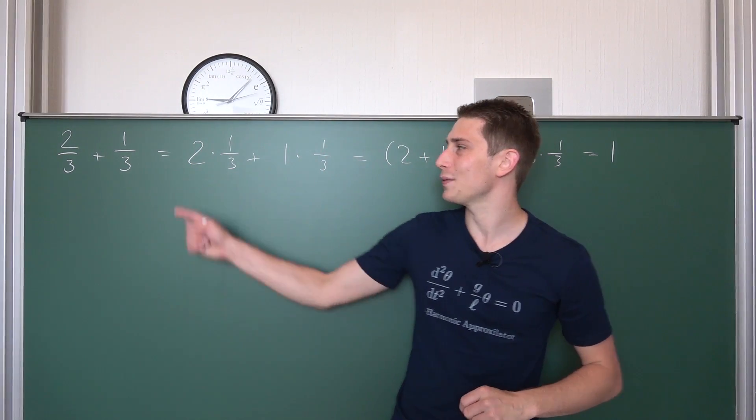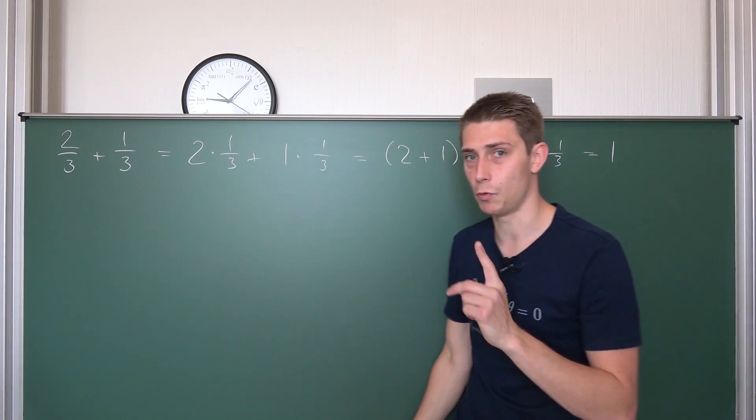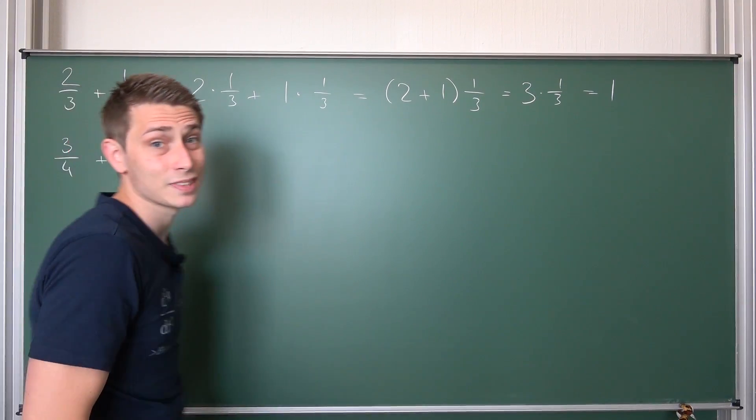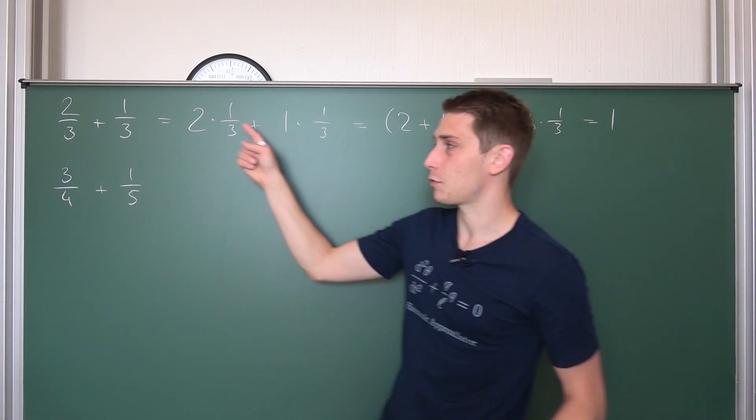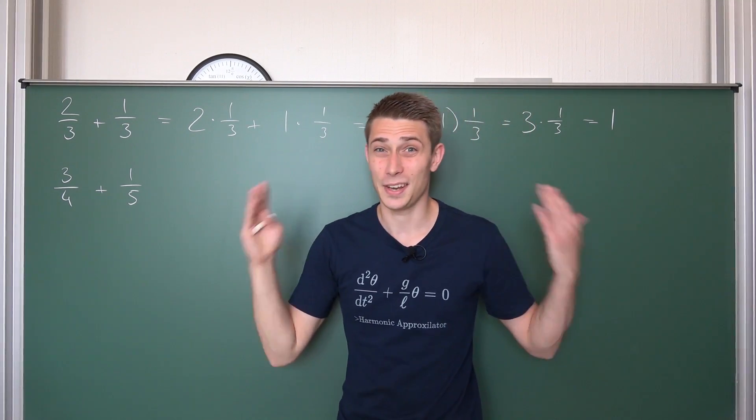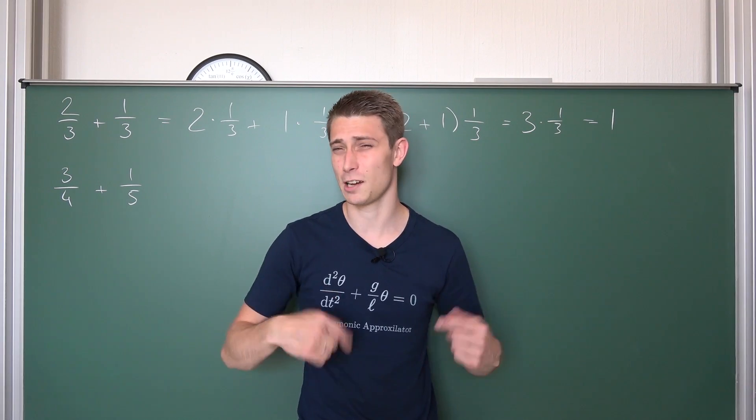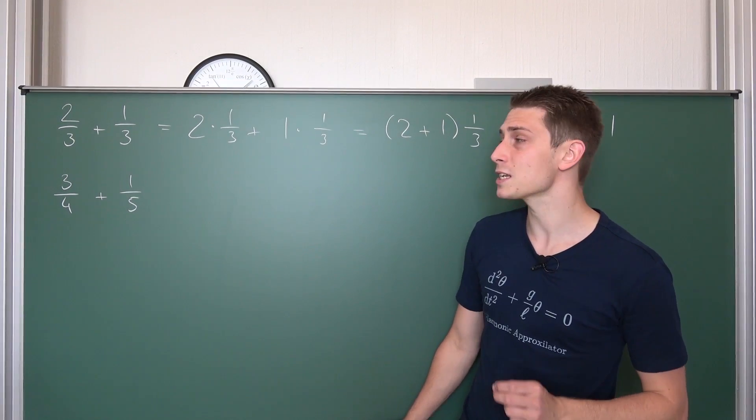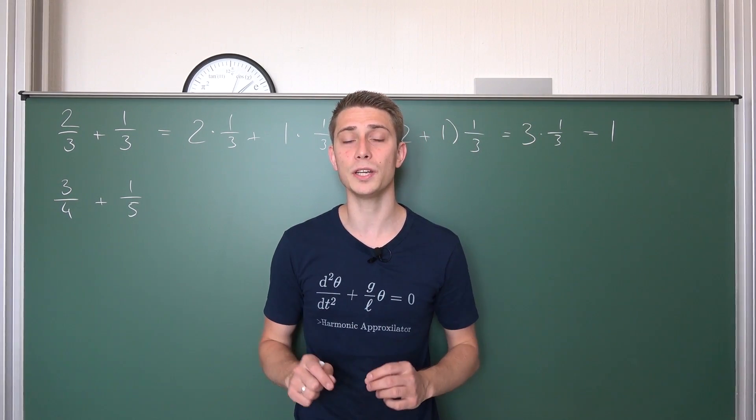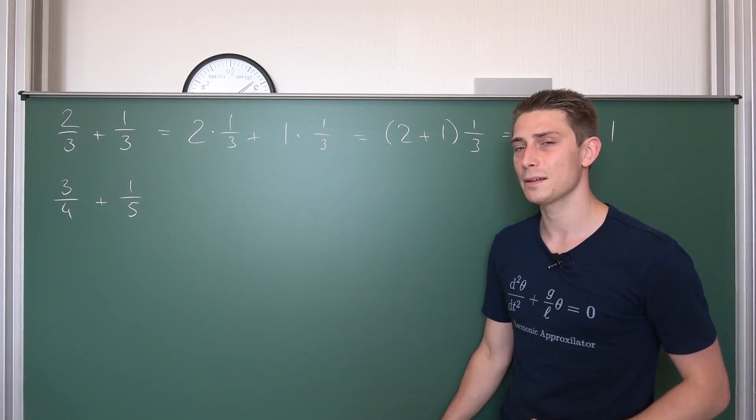Now we are going to take a look at an example where we don't have a common denominator. Right, now was pretty easy, we had a common factor of one third common denominator. But what happens if we take a look at, let's say, three quarters plus one fifth? What is this exactly? I mean, even rewriting the fractions accordingly like we did here won't give us a common factor. We would have three times one quarter plus one times one fifth, not a common factor here, not possible to factor something out. This is why we use something that we have talked about in the last video. We are going to expand fractions such that we cleverly get a common denominator out of this.